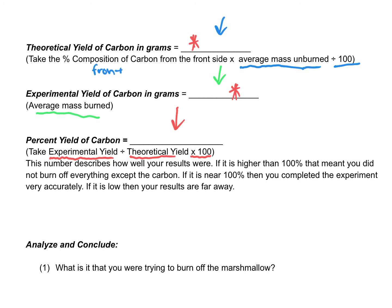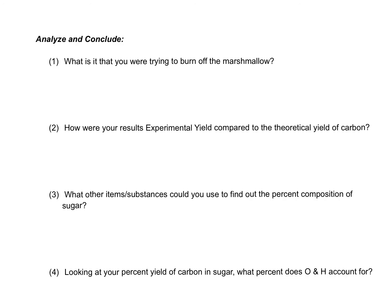Now, your percent yield of carbon should be less than 100%. If you got more than 100% if you were doing this, that means you didn't burn it well enough. But considering I did the experiment for you, I know you should get a number less than 100%. Okay, next part is you look at the questions right here, and you will answer those. Once you do that, you should submit your assignment, and you should be good to go.